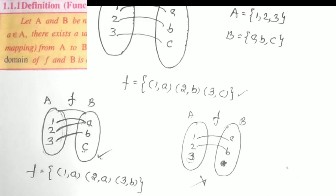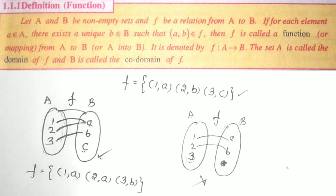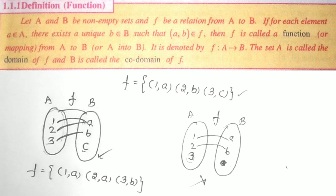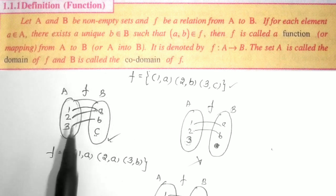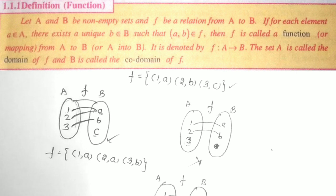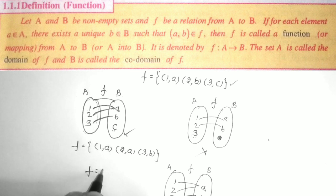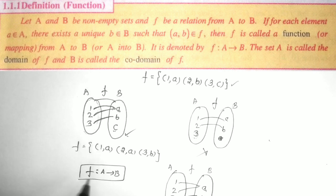Let us see the formal definition. Let A, B be non-empty sets and F be a relation from A to B. Then for each element a belonging to A, there exists a unique b belonging to B such that (a, b) belongs to F — this is called a function. It is denoted by F: A→B. The first set A is called the domain of F and the second set B is called the co-domain of F.